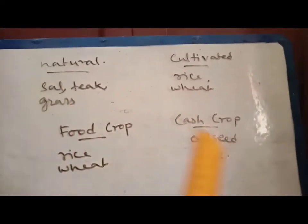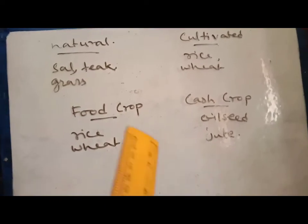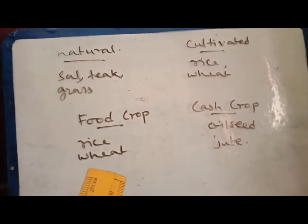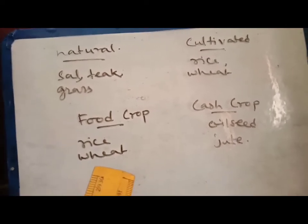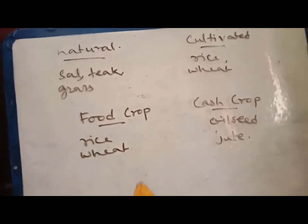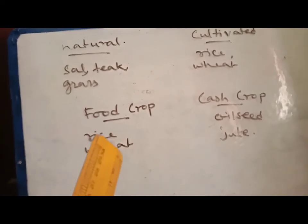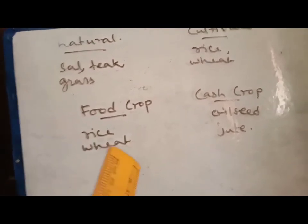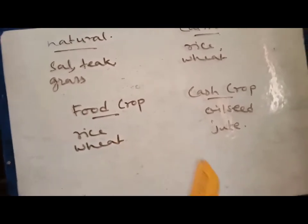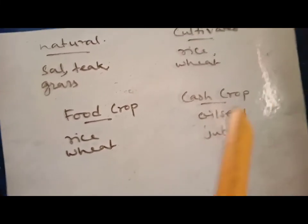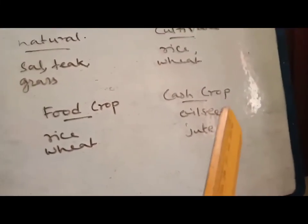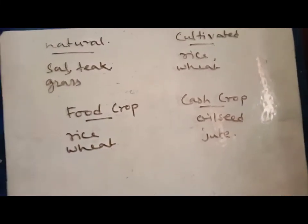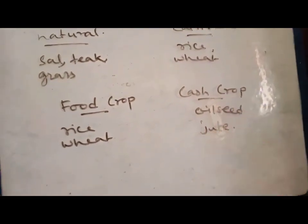Now here I have also written about food crops and cash crops. What is food crop and cash crop? Food crops are those that are used by the farmer and the extra is sold to other people. That means rice, wheat — we are eating this, and after that, if there is extra, the farmer sells it. Cash crops are generally grown by the farmer to sell only, like oil seeds, jute, sugar cane and everything.